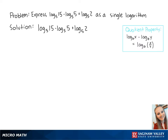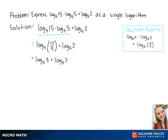First, we can use the quotient property to combine these two logs. So this equals the log base 5 of 15 over 5 plus the log base 5 of 2. This equals the log base 5 of 3 plus the log base 5 of 2.